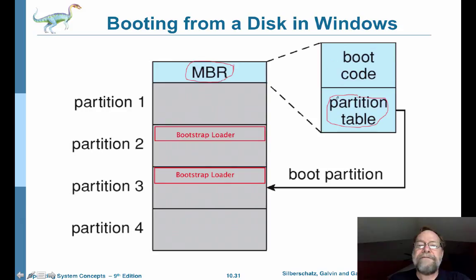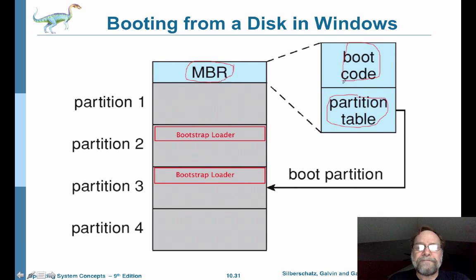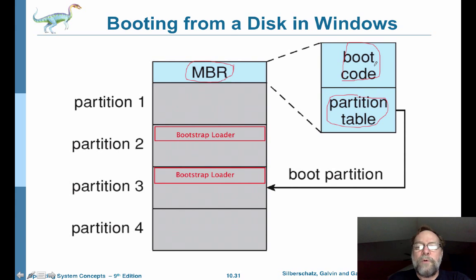That information is stored in the low-order tracks. The boot code basically indicates which partition you want to boot from. So the partition table says which cylinders define which partitions, and the boot code tells you which partition you actually want to boot from.